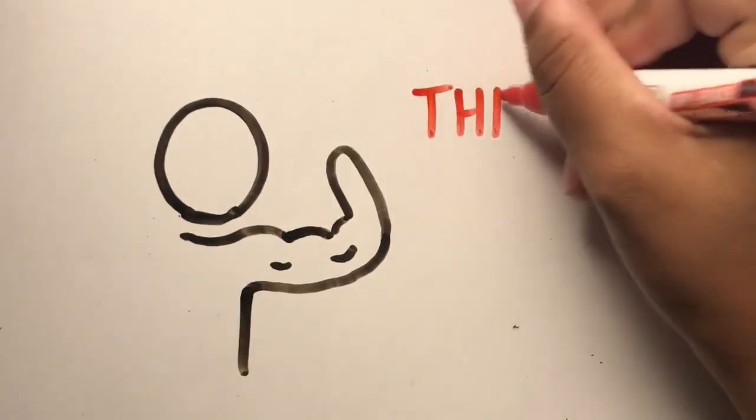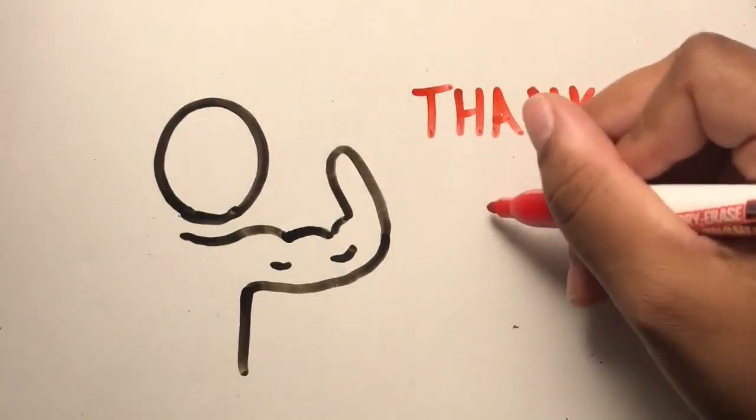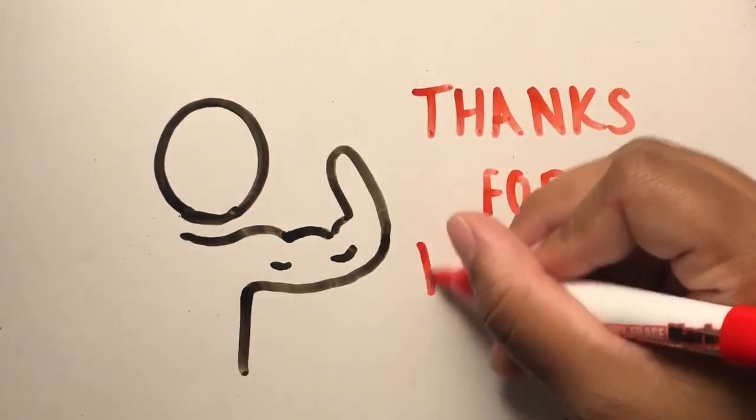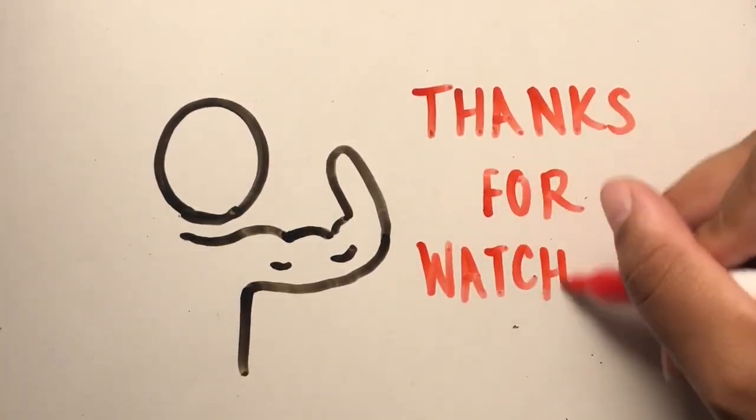We hope you learned a little bit about how muscles relax and contract. Now we know how Bob was able to curl his biceps. Thanks for watching!